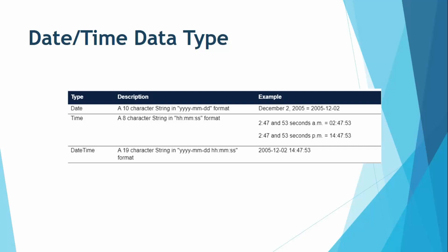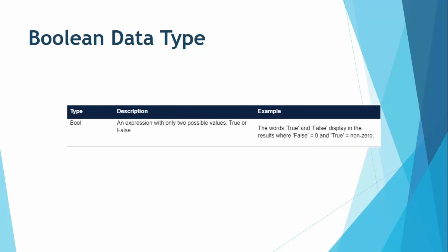The combined date and time format is a 19-character string: four characters for year, two for month, two for day, and two each for hours, minutes, and seconds. Examples are shown on the right side of the screen. These are the date and time data types supported in Altrix. Next we have the boolean data type.